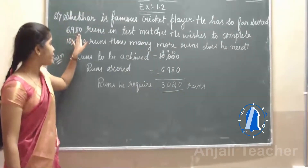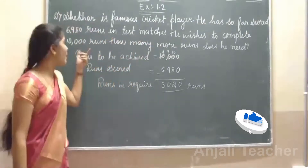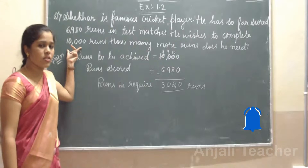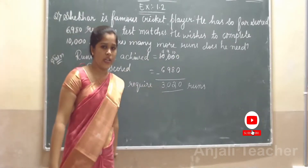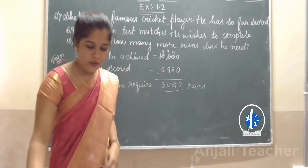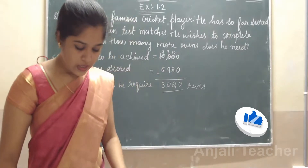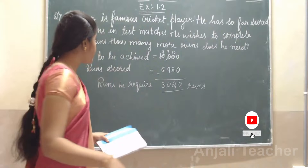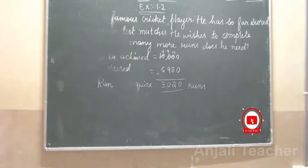He wishes to complete 10,000 runs. How many more runs does he require? He required 3,020. Okay, hope you understood. Let's move to the next question — 3,020.